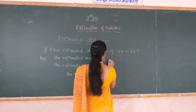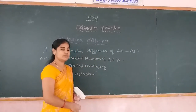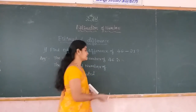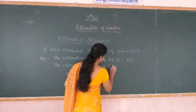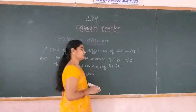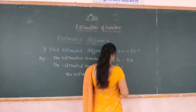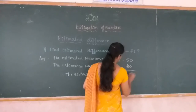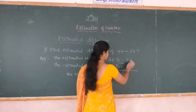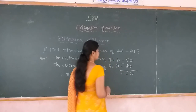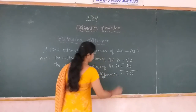The estimated number of 46: unit place has 6, which is more than 5, so write the next tens place — 50 is the estimated number of 46. The estimated number of 21: unit place has 1, which is less than 5, so write the previous tens place — 20 is the estimated number of 21. Now subtract: 50 minus 20 equals 30. Therefore, the estimated difference of 46 and 21 is 30.